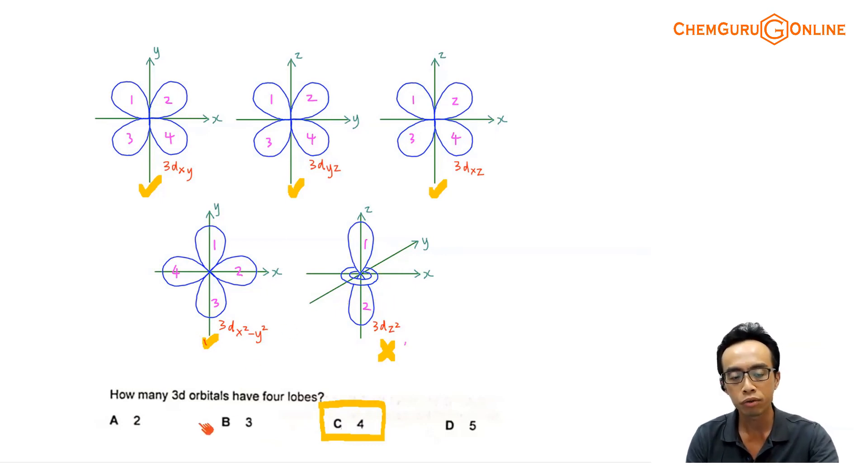So how many 3d orbitals have 4 loops? Of course, we only have 4 of them, and the answer to this question, number 1, which is actually pretty simple, this answer has to be option C.